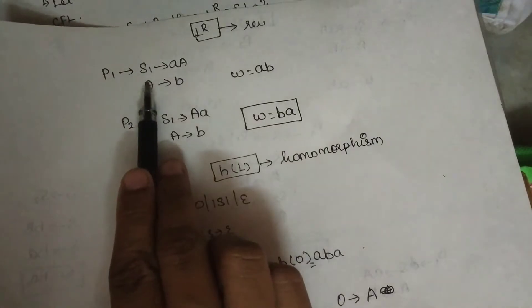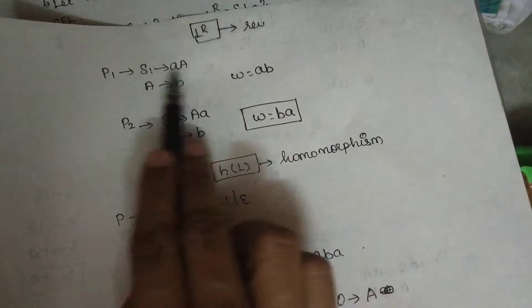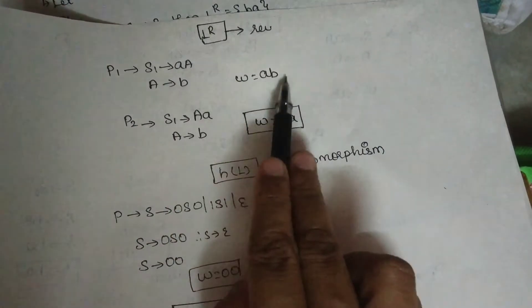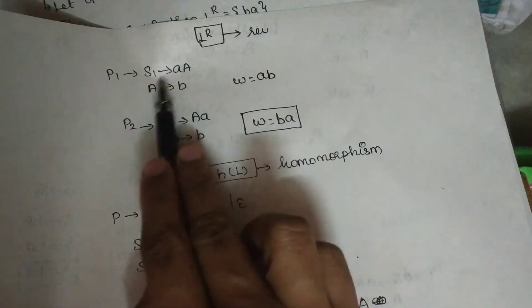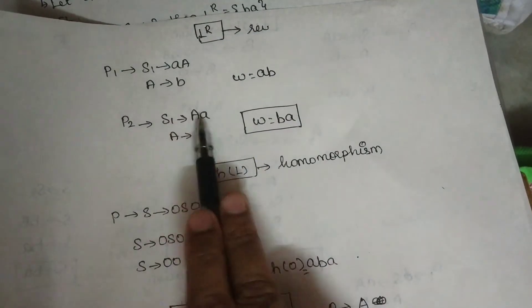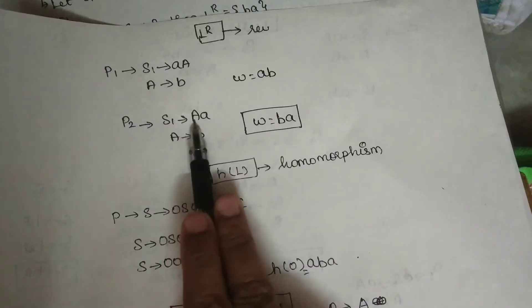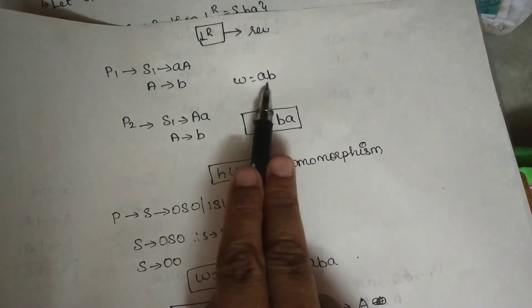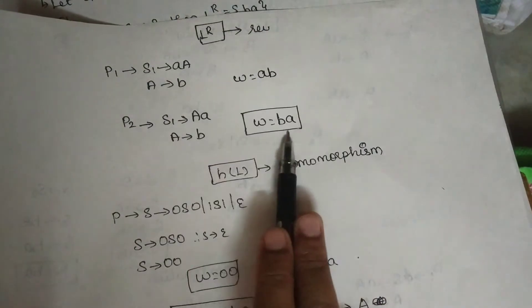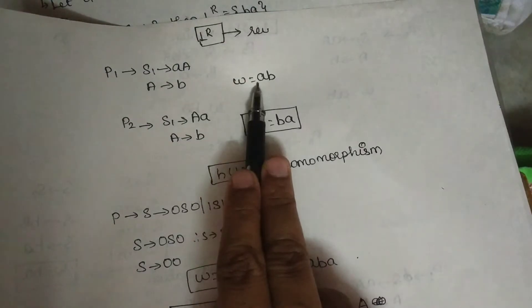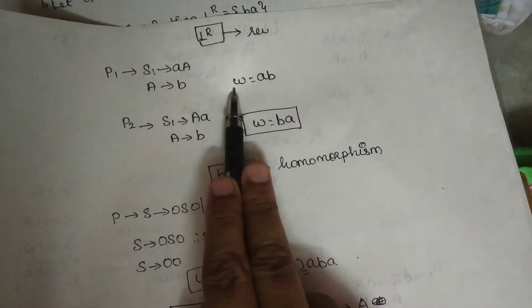This is the language. If you use the production rule, if you use the strings, if you use A, we use A, B. If you use this grammar, we use the production rule. If you use A, A, we use A, B. If you use A, if you use this string — if you use A, it's my reverse. Then if there is a string with the string, it's the context-free language.